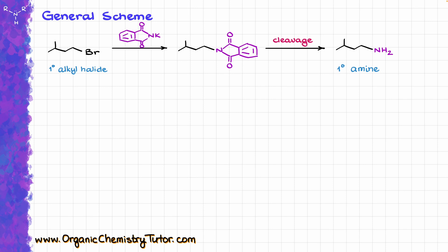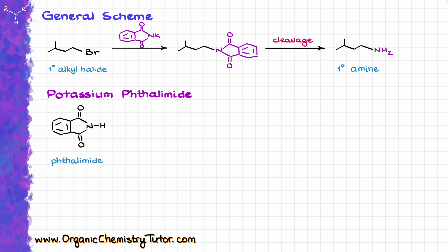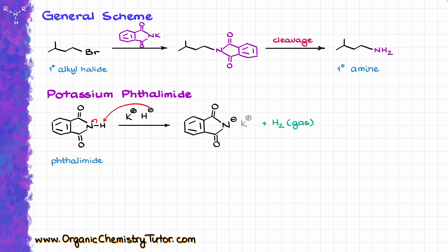There are a few things we need to discuss about the mechanism and the overall reaction. First, let's talk about the potassium phthalamide itself. The molecule is synthesized from phthalamide by treating it with potassium hydride, which is a very powerful base, so it deprotonates this position, giving us the corresponding product where potassium is the counter ion, and H₂ evolves as a gas. However, the pKa of phthalamide is about 8, which means it can be quite easily deprotonated with something as simple as potassium hydroxide. Within the scope of your class, you could see either way, and both are perfectly fine.